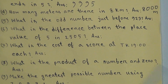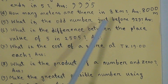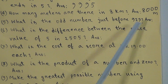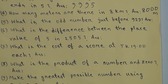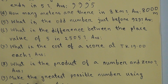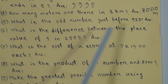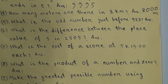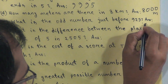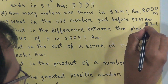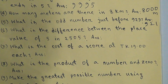Question 5: what is the odd number just before 923? The number immediately before 923 is 922, which is even. The next previous number is 921, which is odd. So the odd number just before 923 is 921 — nine hundred twenty-one.